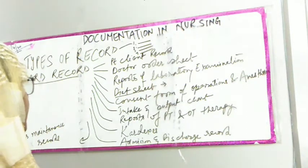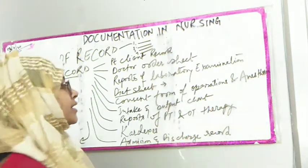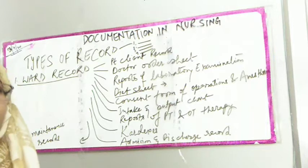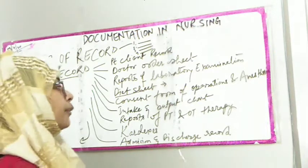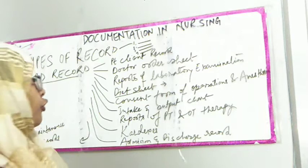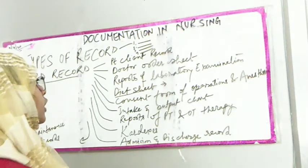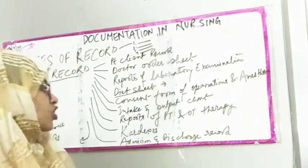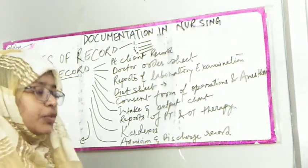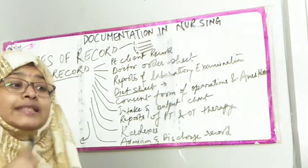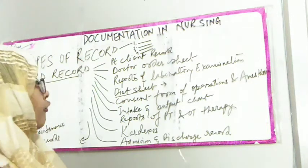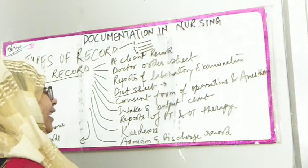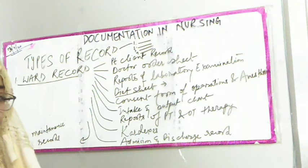The consent form for operation and anesthesia is also a ward record — for any major or minor procedure, we sign the patient's consent form. Then the intake and output chart records vital signs and fluid intake/output. Reports of physiotherapy and occupational therapy are also added to the ward record.